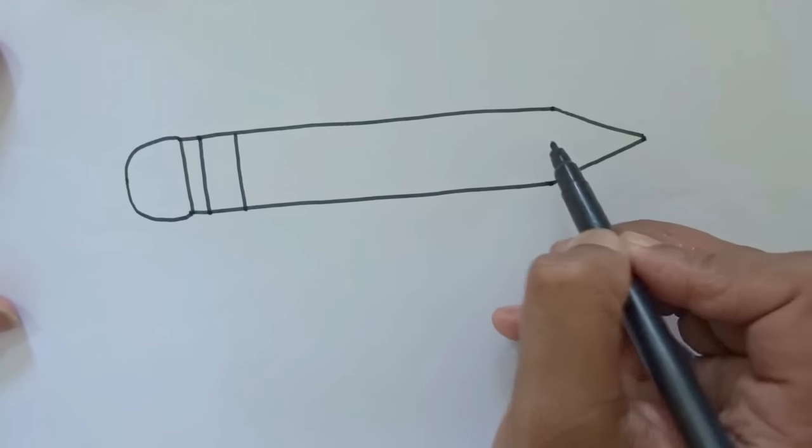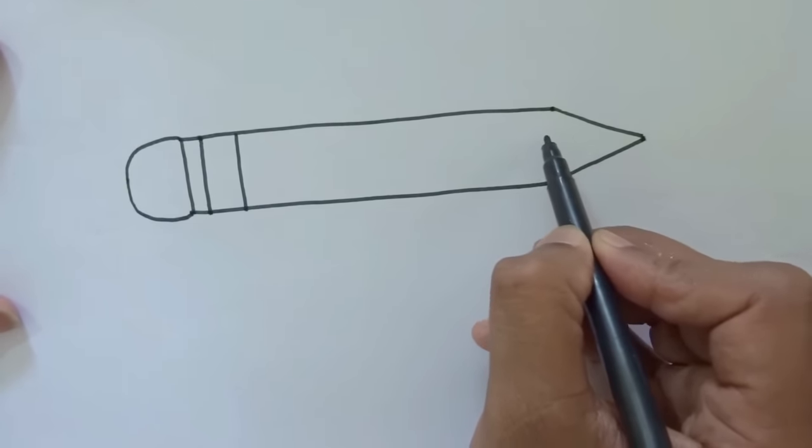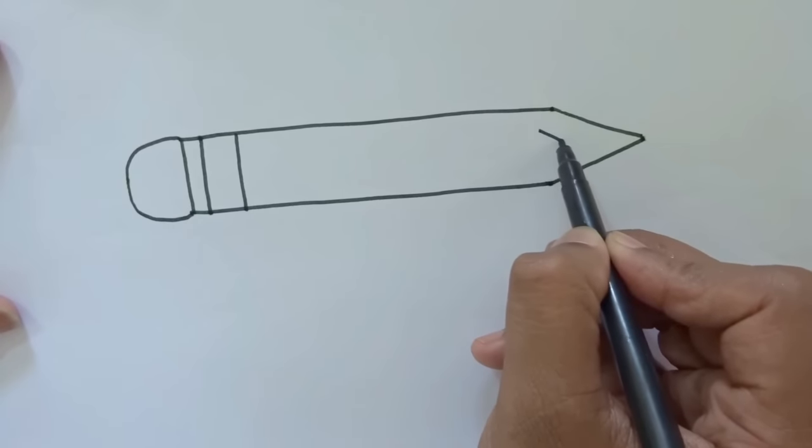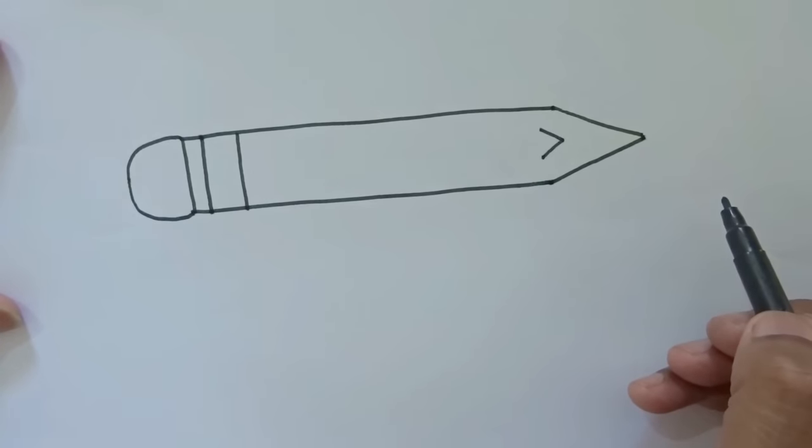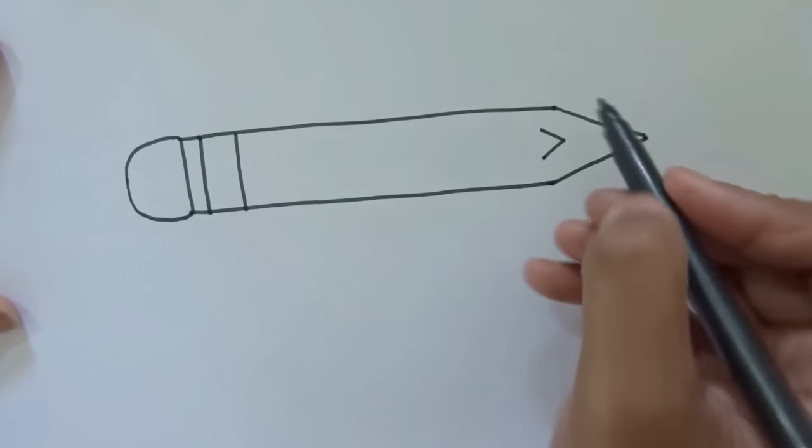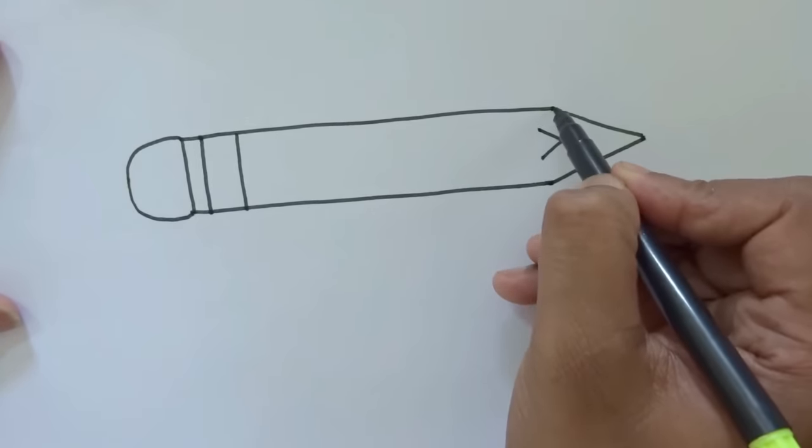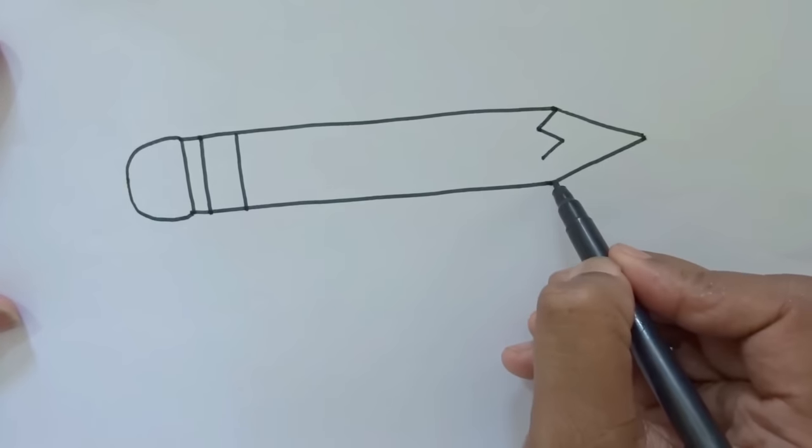Now what we'll do over here is we'll write a V, like this. Now join this point and this point, and from here, this point and this point.